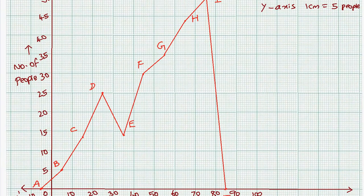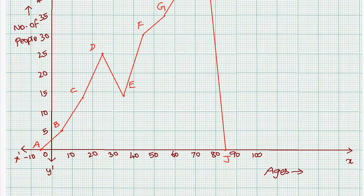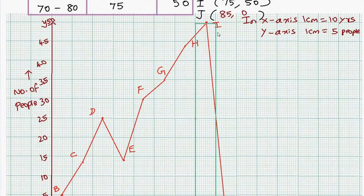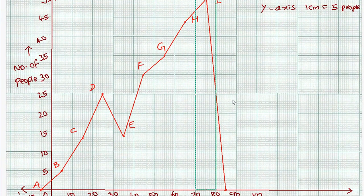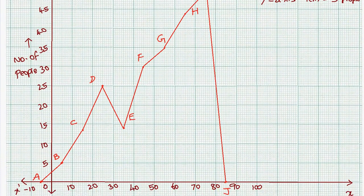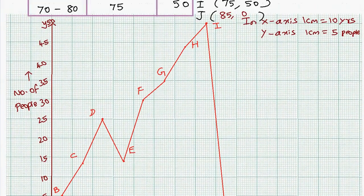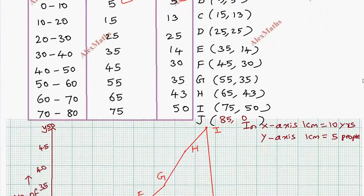We connect all the midpoints with a straight line from one point to the next to complete the frequency polygon. The midpoint lane connects all the plotted points. For the left side, the midpoint touches zero on the frequency axis.